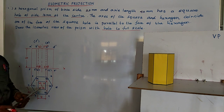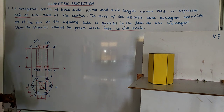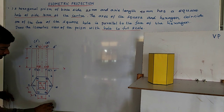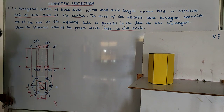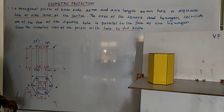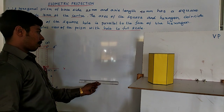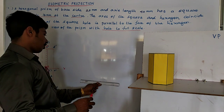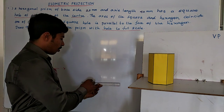Let us draw the isometric projection. I project from here and keep the view side in this direction. First, we have to draw one XY line — draw that line, keep one point.